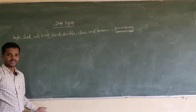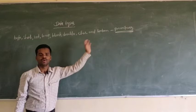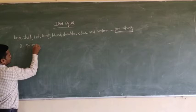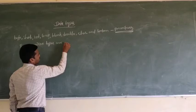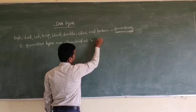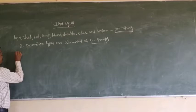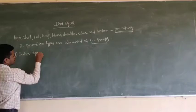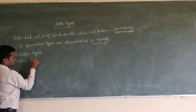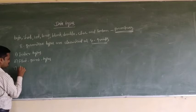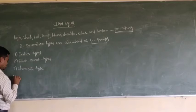That is byte, short, int, long, float, double, character, and boolean. These 8 primitive data types are classified into 4 groups. What are those 4 groups? Number 1: integer types. Number 2: floating point types. Number 3: character types. Number 4: boolean type.